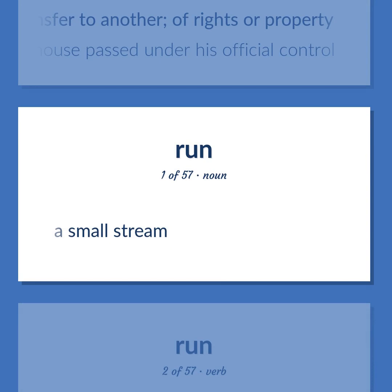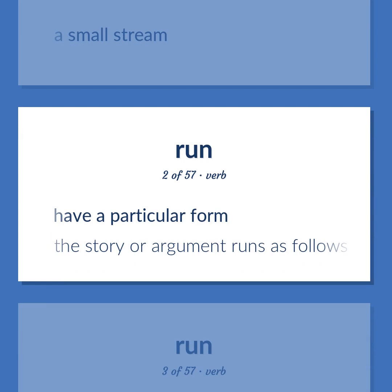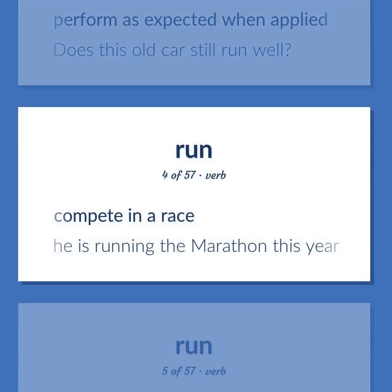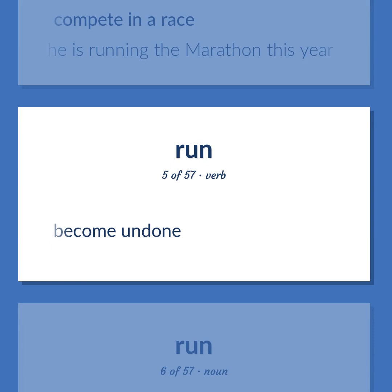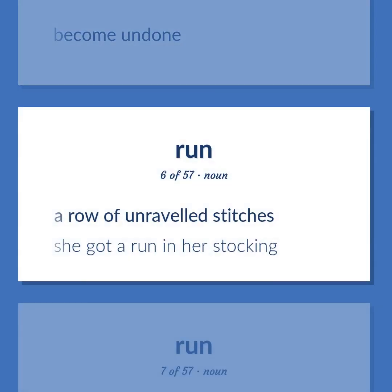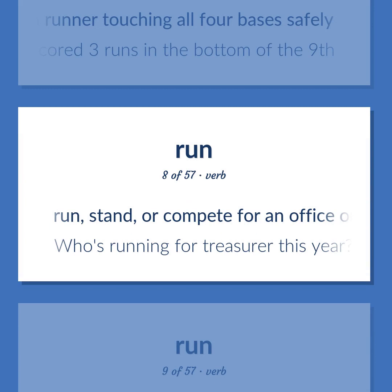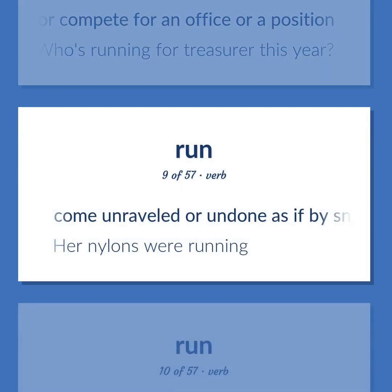Run: a small stream. Have a particular form — 'The story or argument runs as follows.' Perform as expected when applied — 'Does this old car still run well?' Compete in a race — 'He is running the marathon this year.' Become undone. A row of unraveled stitches — 'She got a run in her stocking.' A score in baseball made by a runner touching all four bases safely — 'The Yankees scored three runs in the bottom of the ninth.' Run, stand, or compete for an office or a position — 'Who's running for treasurer this year?' Come unraveled or undone as if by snagging — 'Her nylons were running.'